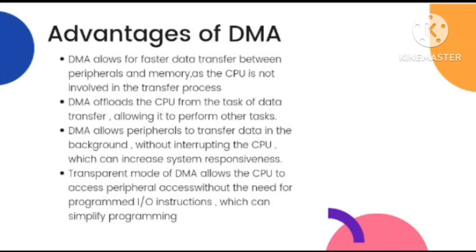Now I will explain the advantages of DMA. DMA allows for faster data transfer between peripherals and memory as the CPU is not involved in the transfer process. DMA offloads the CPU from the task of data transfer, allowing it to perform other tasks. DMA allows peripherals to transfer data in the background without interrupting the CPU, which can increase system throughput. Transparent mode of DMA allows the CPU to access peripherals without the need for programmed input-output instructions, which can simplify programming.